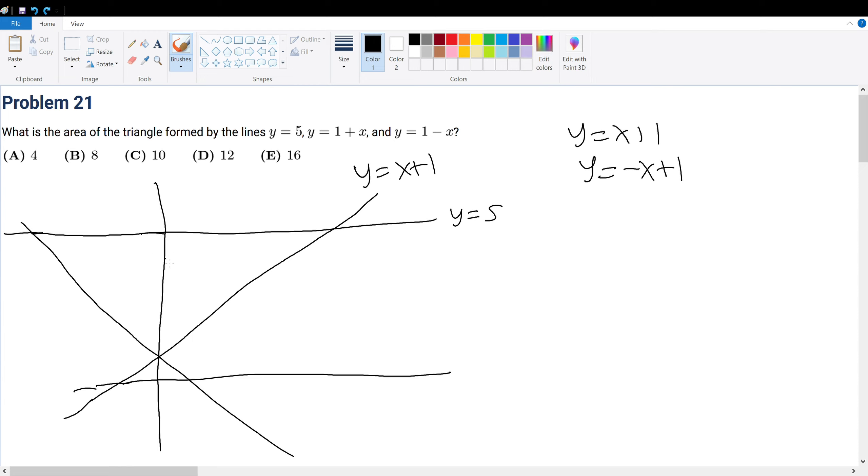What is this intersection point right here? Well, x + 1 must equal -x + 1, right? So in other words, 2x = 0, x must equal 0. So x = 0, y = 1. That should be plus 1. So this point right here is (0, 1).